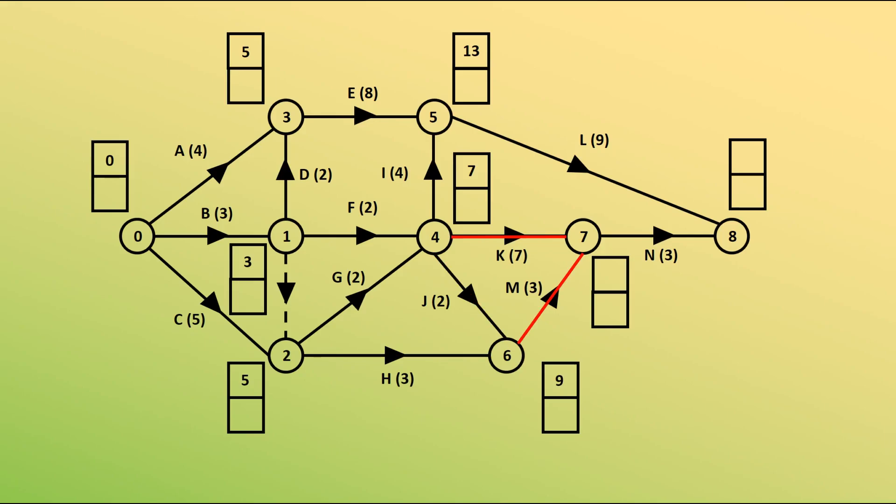Node 7 has K and M going into it. We want the time from node 4, which is 7, plus K is 7, so 14. Or 9, the earliest time to be at node 6, plus 3 is 12. The larger value is 14. And finally, we have node 8. 14 plus 3 is 17. 13 plus 9 is 22. The larger of those two is 22. So now we know that the shortest time we could complete this whole activity network is a time of 22.